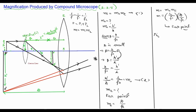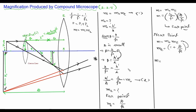Now imagine the final image is produced at the near point. M = MO × ME. The ME for near point image formation is 1 + D/FE, where F is replaced by FE since the focal length of the eyepiece is FE. Substituting: M = (L/FO) × (1 + D/FE). This is the magnification produced when the final image is formed at the near point.